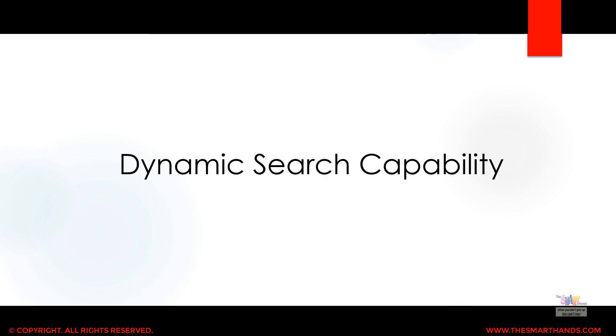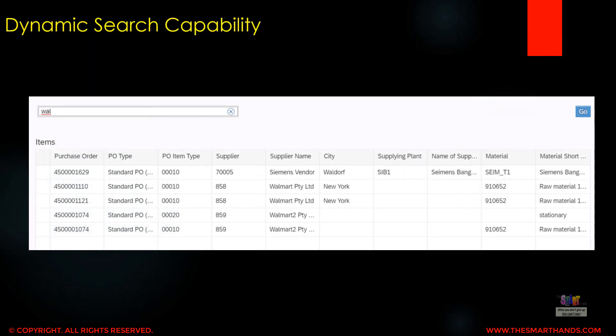In the next part, we'll also talk about the dynamic search capability in the Fiori system. S/4 HANA has provided a search option where we can search for a purchase order just by typing the vendor name, material name, or product name. This is a dynamic search capability that we will see in a moment.